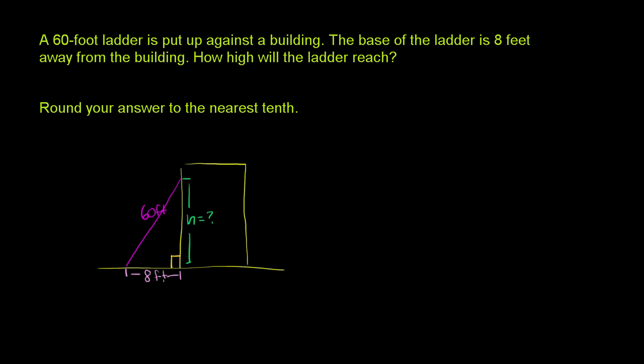The Pythagorean theorem tells us that the sum of the squares of the two shorter sides is equal to the square of the hypotenuse. That longest side is the side opposite the 90-degree angle, and that's the hypotenuse.